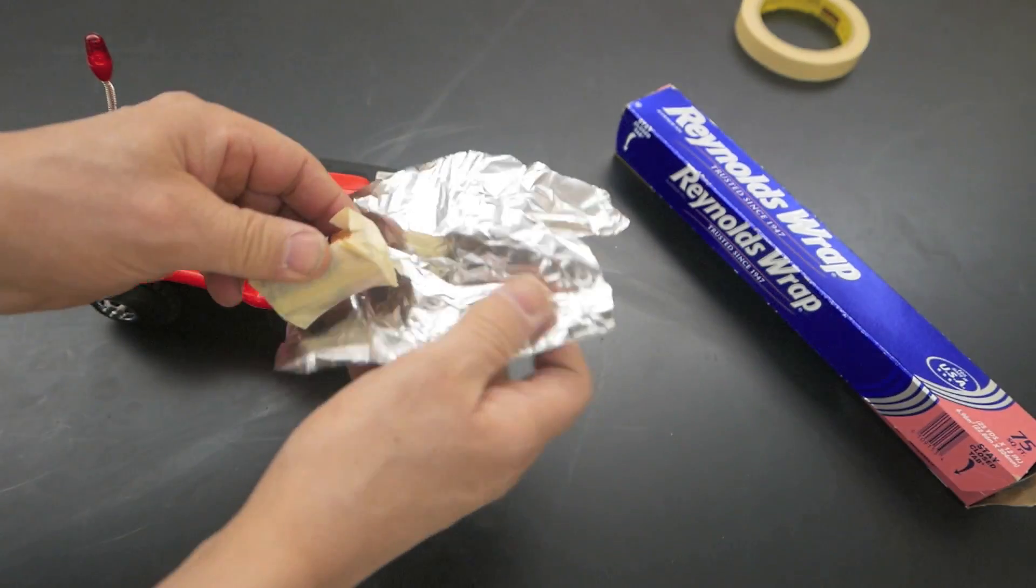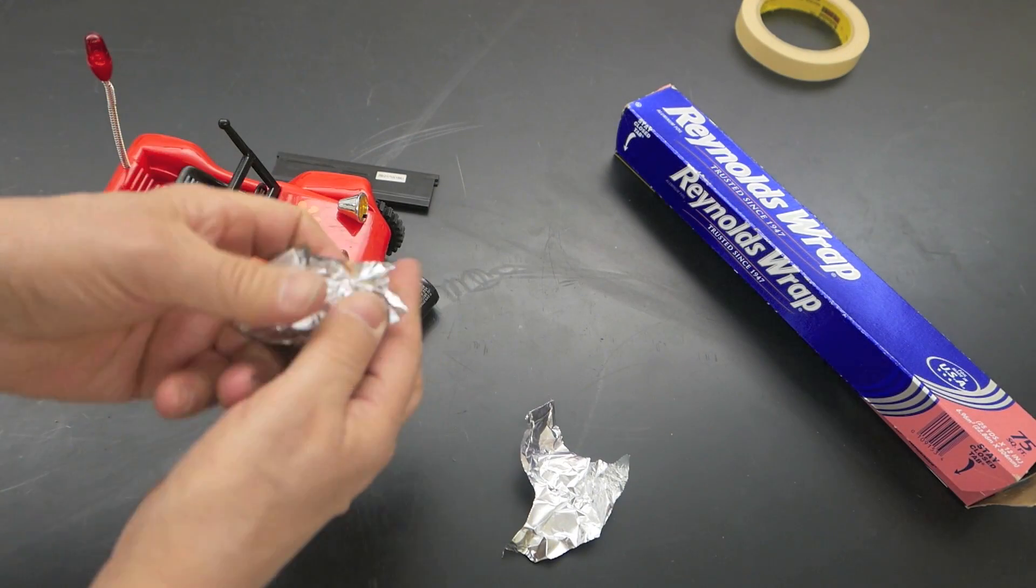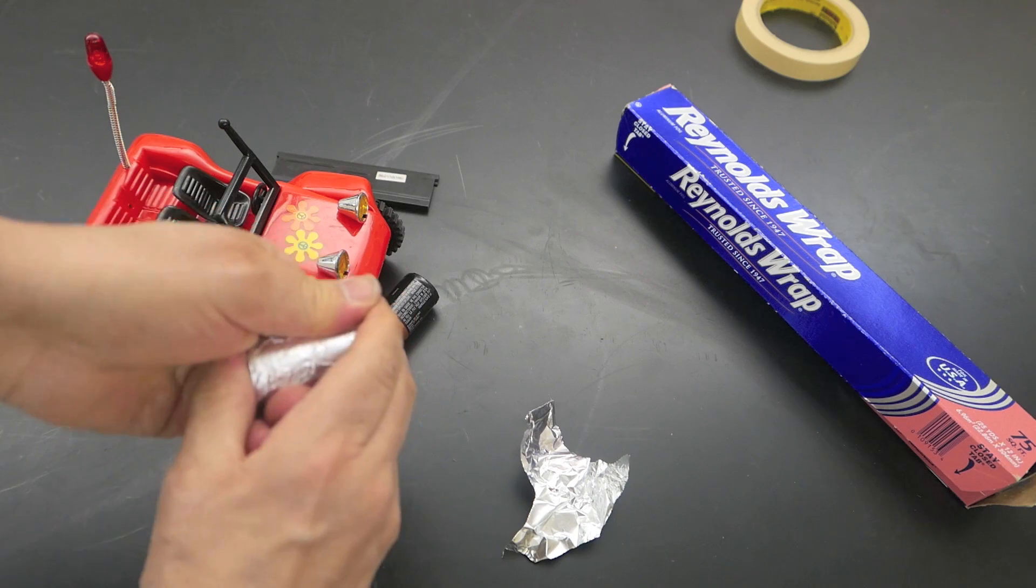And simply wrap it with aluminum foil. That's going to conduct electricity inside the battery compartment, so that just the one battery is powering this car.